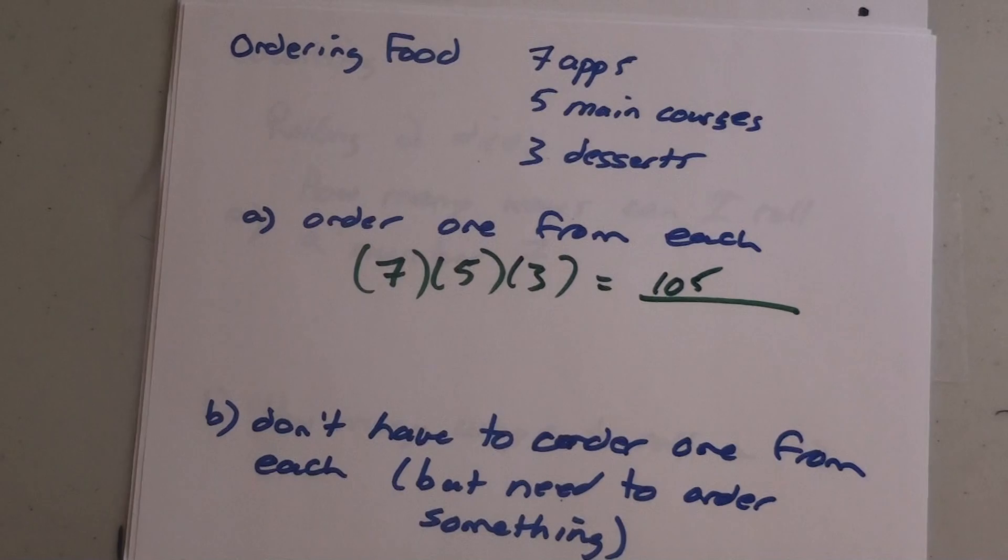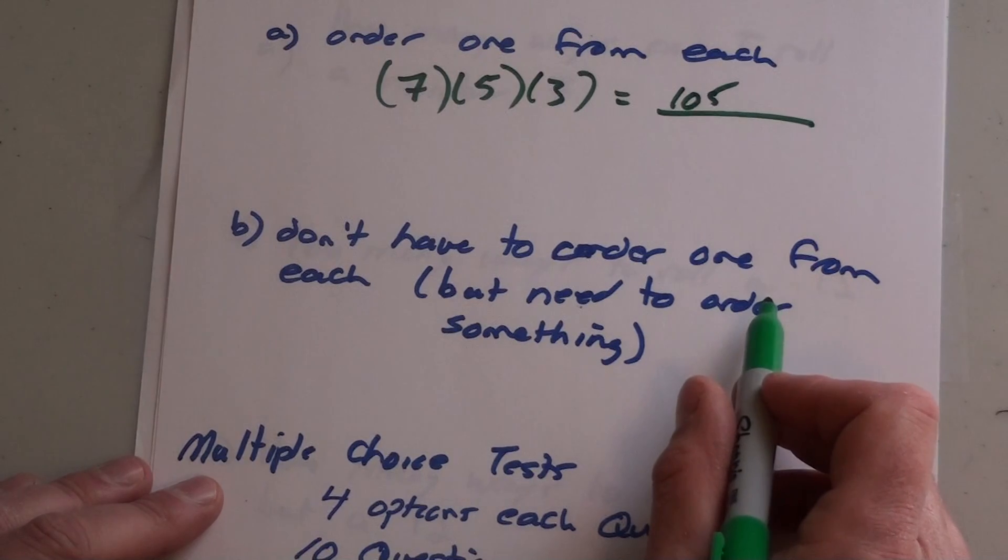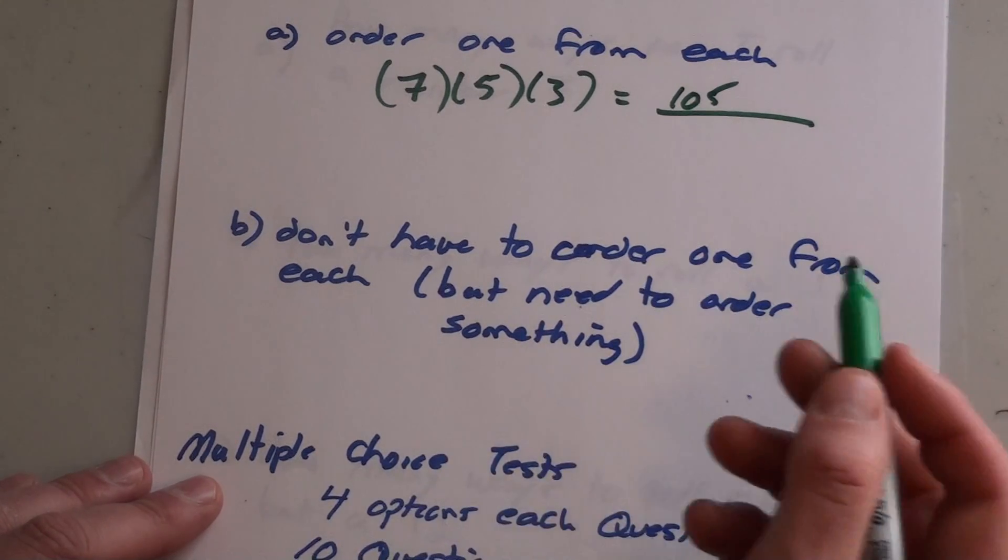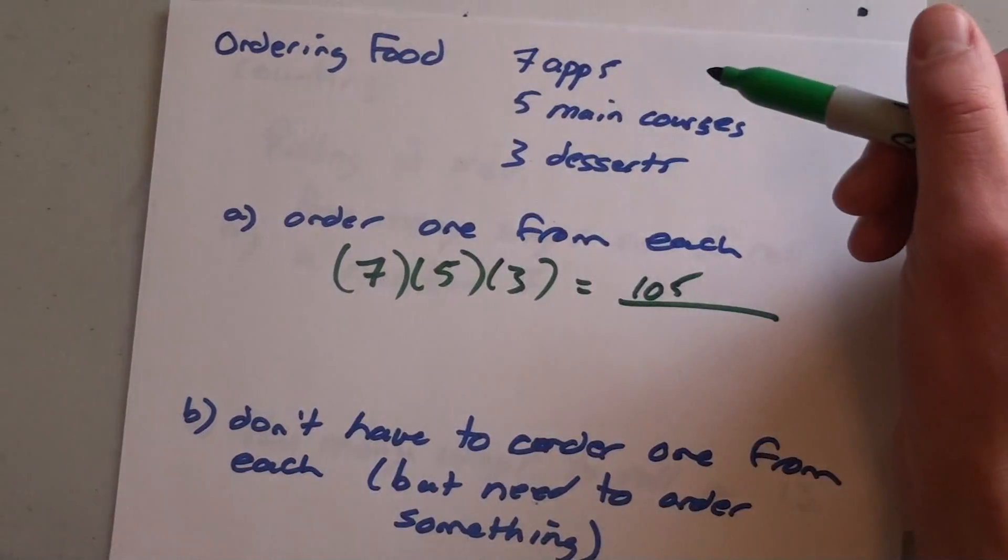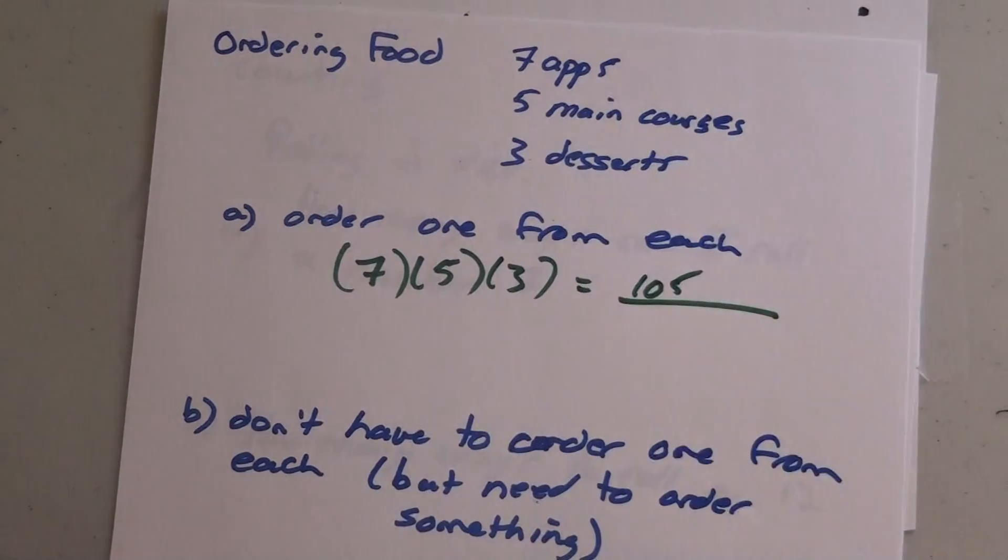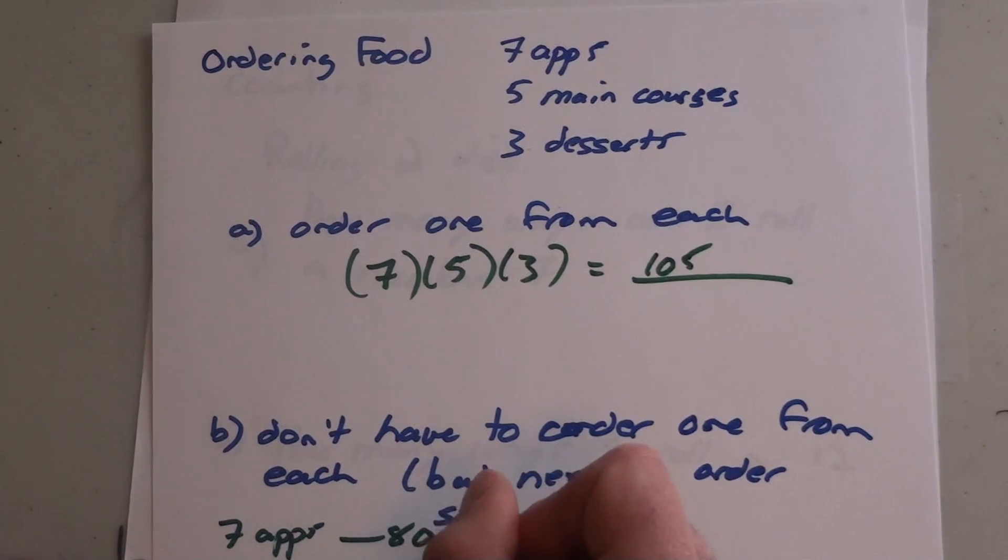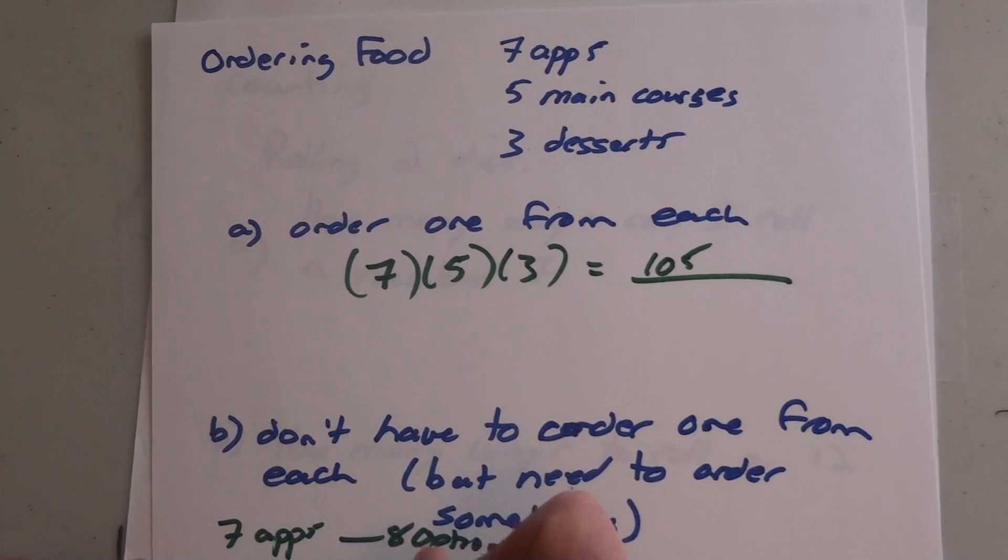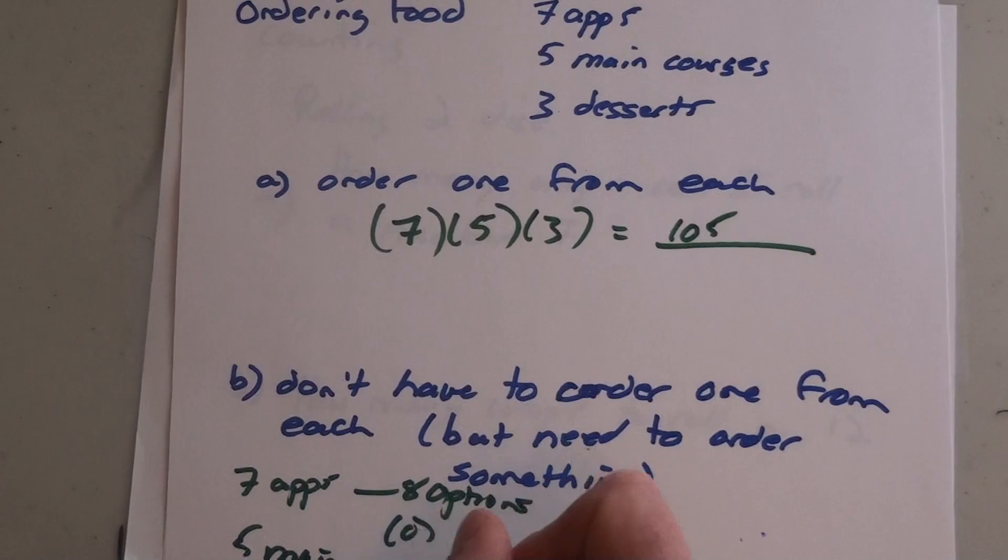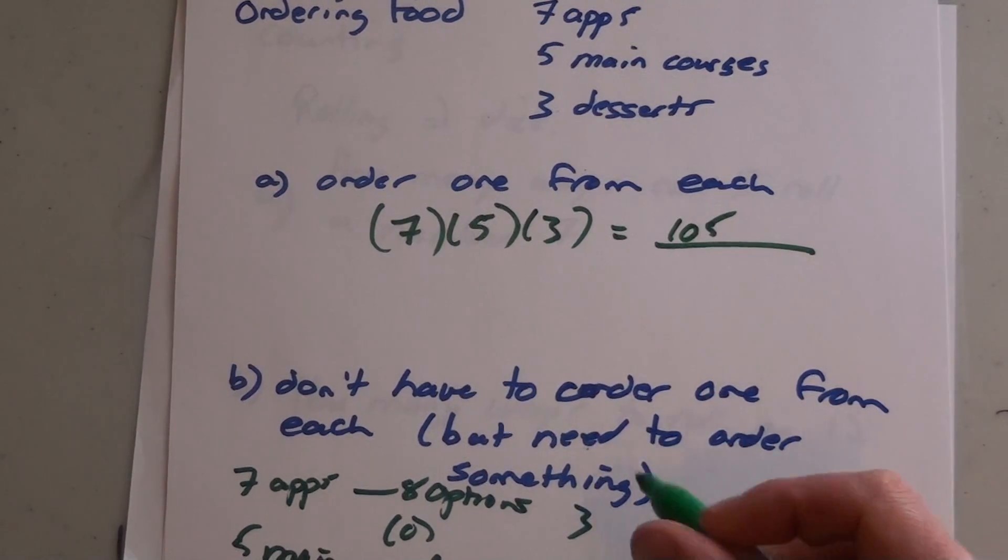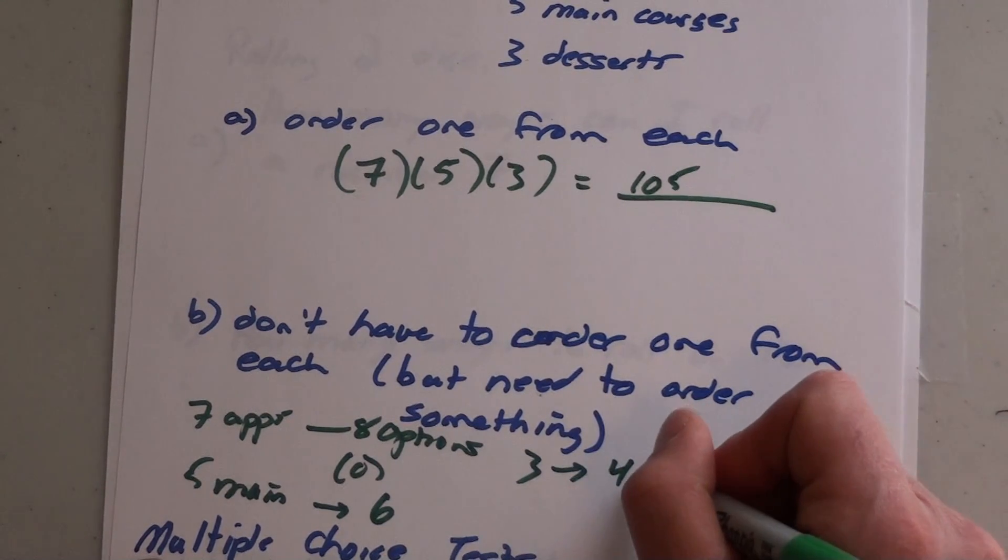Now what gets a little interesting is maybe you don't have to order one from each, but you need to order something. That means you actually have the zero possibility: I don't order an app, I don't order a main course, I don't order dessert. So instead of having seven apps, there's actually eight options because you have the zero option. Your five main courses actually turns into six, and your three dessert options turn into four options.